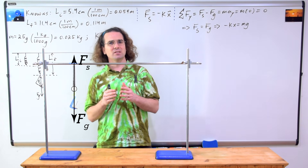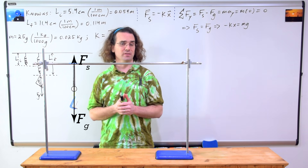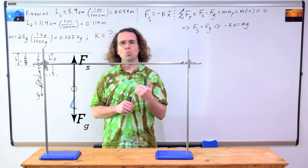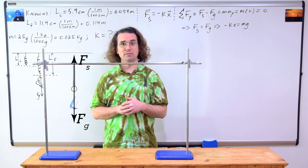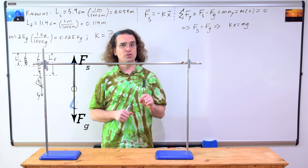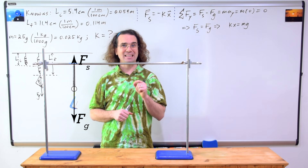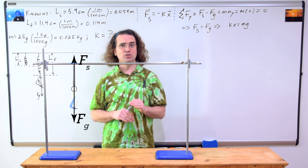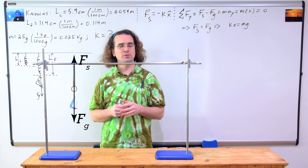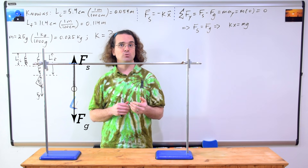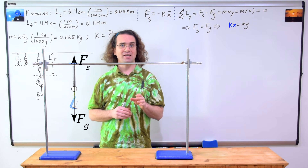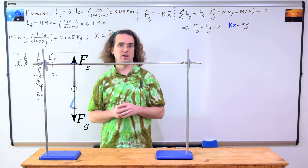Please pay attention because a lot of students make this mistake. When we drew the free body diagram and summed the forces, we already determined the direction of the spring force. We used the negative in the spring force equation to determine the direction of the spring force in the free body diagram, so we do not need to use the negative again. Instead, when plugging the spring force equation into Newton's second law, we need to use the magnitude of the spring force equation — in other words, k times x and not negative k times x.